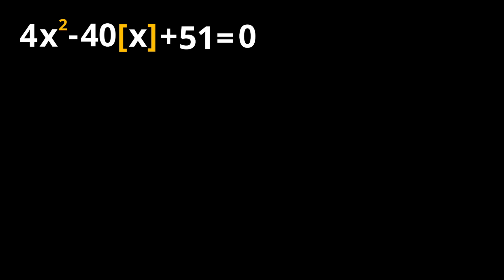First of all, I'm going to move this to the right-hand side, so I will have 4x squared plus 51 equals 40 times floor of x.